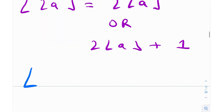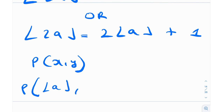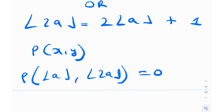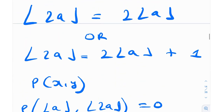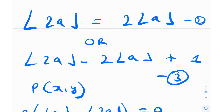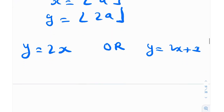Now coming back to the problem: we want polynomial P(x, y) such that when x = ⌊a⌋ and y = ⌊2a⌋, P(x, y) = 0. Plugging into our two equations, from equation 2 we get y = 2x, and from equation 3 we get y = 2x + 1. So y can be either 2x or 2x + 1.